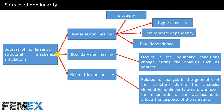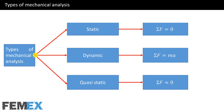In structural mechanics simulations we have three sources of nonlinearity: material nonlinearity, boundary nonlinearity, and geometric nonlinearity. Material nonlinearity occurs if we define plasticity, hyperelasticity, temperature dependency, or rate dependency. Boundary nonlinearity occurs if the boundary conditions change during the analysis, such as contact. Geometric nonlinearity is related to changes in the geometry of the structure during the analysis and occurs whenever the magnitude of the displacements affects the response of the structure.